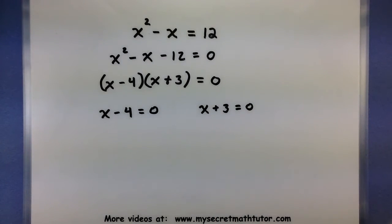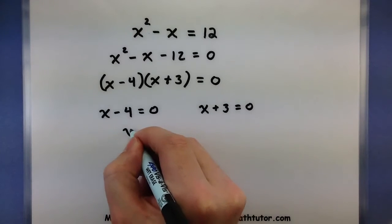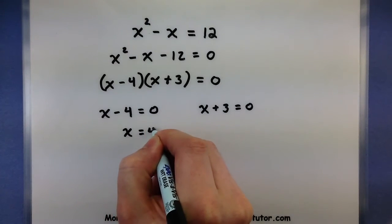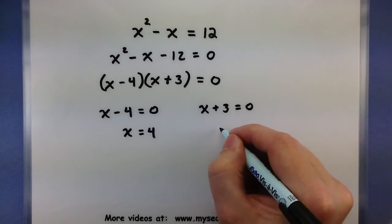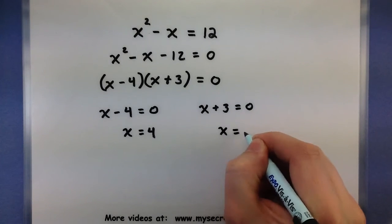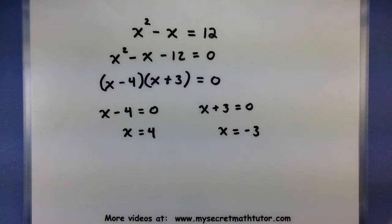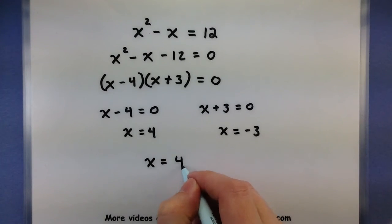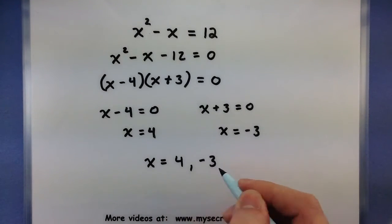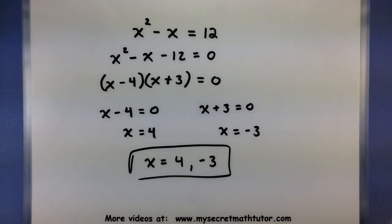Now individually, these are much nicer equations to solve. In fact, we can do it directly. So for this one on the left, I will add 4 to both sides. There we are. For this one, I will subtract 3 from both sides. There we are. And now I have my solutions. That x is either equal to 4 or equal to a negative 3. So if you follow the process correctly, you will get your answers pretty quickly.